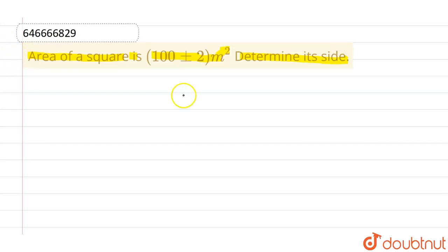So we know, let us suppose that this is a square, and side of square is A, then area will be equals to A square.